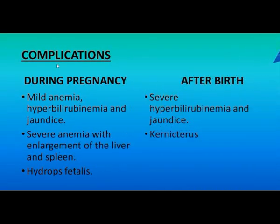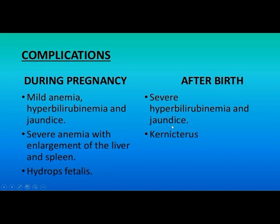Complications that may occur due to Rhesus disease: during pregnancy there is a chance of anemia, hyperbilirubinemia and jaundice, and severe anemia with enlargement of liver and spleen may occur, as well as hydrops fetalis. After birth, severe hyperbilirubinemia and jaundice may occur, and kernicterus is one of the complications.